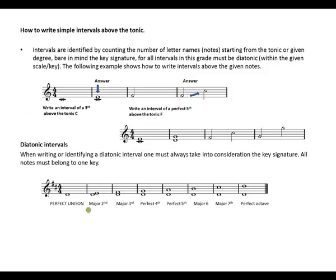Now let's learn how to write simple intervals above the tonic. Intervals are identified by counting the number of letter names or notes starting from the tonic or given degree. Bear in mind the key signature — all intervals in this grade must be diatonic, within the given scale or key.